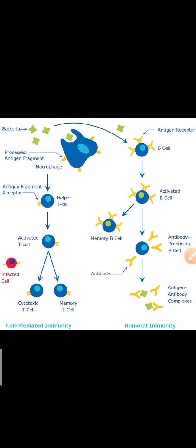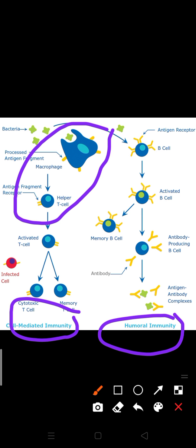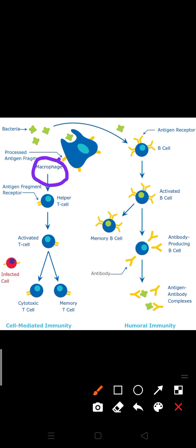Immunity is based on two types: cell-mediated immunity and humoral immunity. In cell-mediated immunity, the phagocytosis process generally takes place. When an antigen comes from outside, macrophages engulf these cells — that is how cell-mediated immunity works. Bacteria or antigen fragments are engulfed by macrophages.